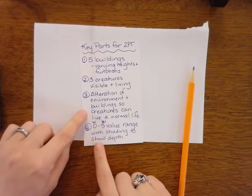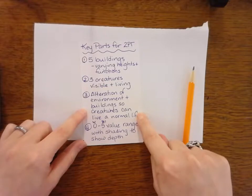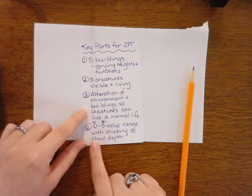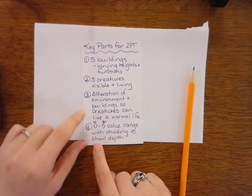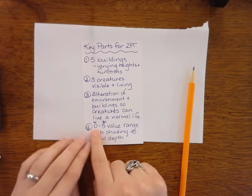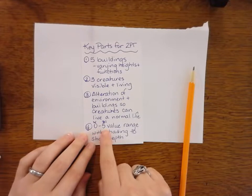Last but not least, once I've checked all of these things, one, two, and three, I also need to see that on your final project you have a zero to five value range to show shading and depth. Your zero is your white and your five is your black, and then you have three steps in between.